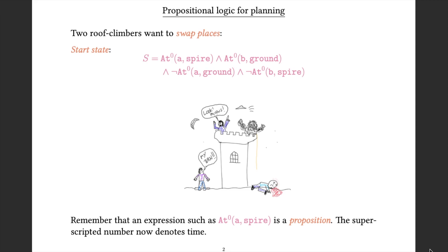I'm now back to my roof climbers. Here I have two of them, one who is on the spire and one who is on the ground and they want to swap places. So I can represent my start state very simply. My start state just says that at time 0 A is on the spire and at time 0 B is on the ground. And it is not the case that at time 0 A is on the ground, and it is not the case that at time 0 B is on the spire.